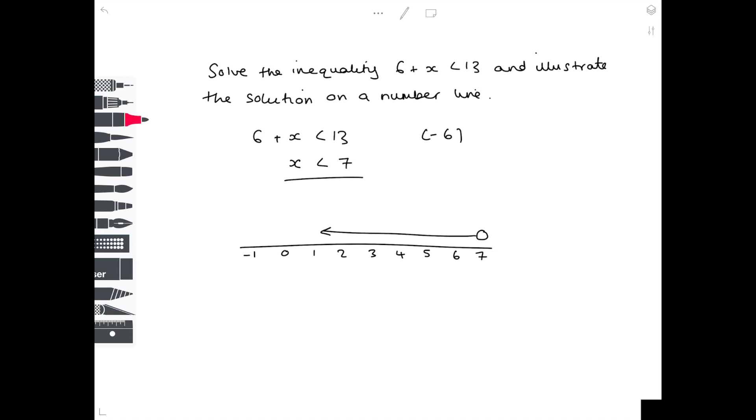And we don't color in the circle. We leave it nice and empty. So this remains an outline. And that's because x has to be less than 7. It can't equal 7. If it had said x is less than or equal to 7, then you would have colored in that circle. And I will show you an example involving that.